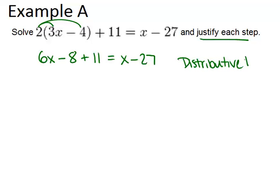Now to shorten that, I'm just going to write PoE for property of equality. The next thing I'm going to do is combine like terms on the left side of the equation, and that would give me 6x plus 3 equals x minus 27. And all we did was combine like terms. That's not really a property.